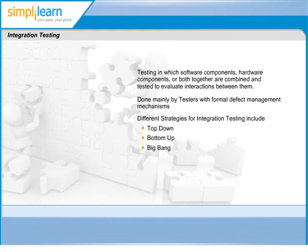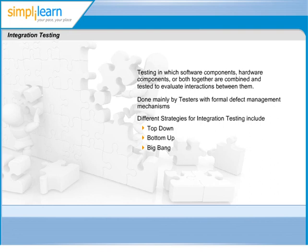The third approach, big-bang, sometimes referred to as the umbrella approach, requires testing along functional data and control flow paths. First, the inputs for functions are integrated in the bottom-up pattern discussed above. The outputs for each function are then integrated in the top-down manner. The primary advantage of this approach is the degree of support for early release of limited functionality. It also helps minimize the need for stubs and drivers.